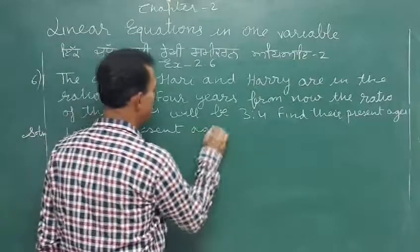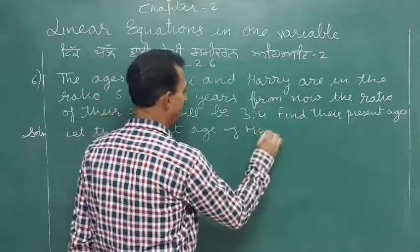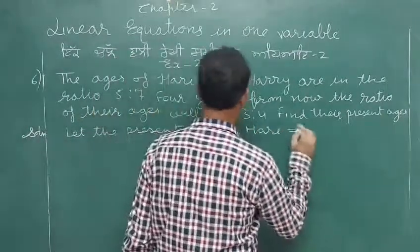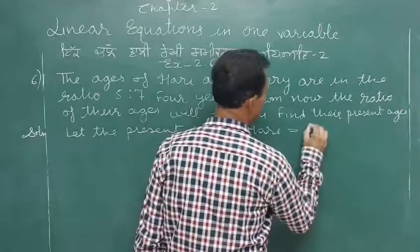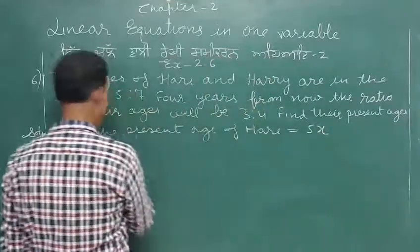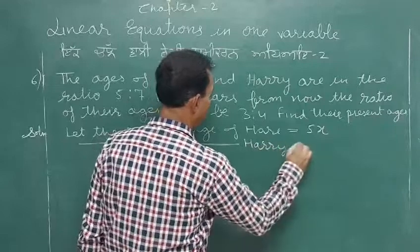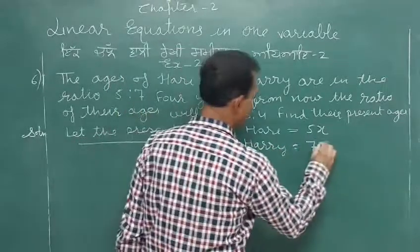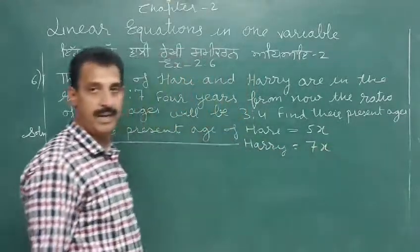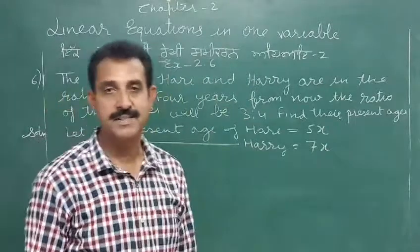Let the present age of Hari be five x, and the present age of Harry be seven x. Okay, their present ages are five x and seven x.